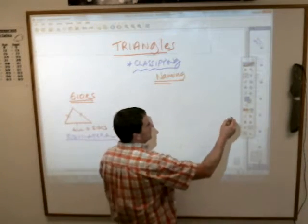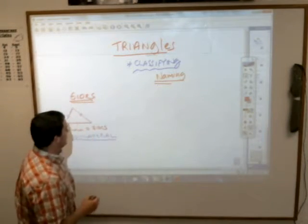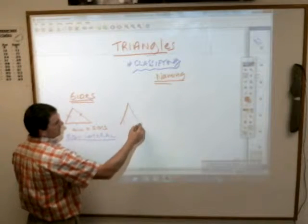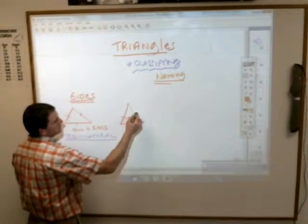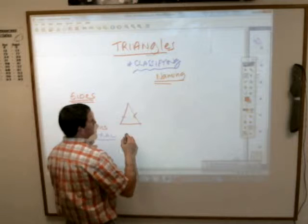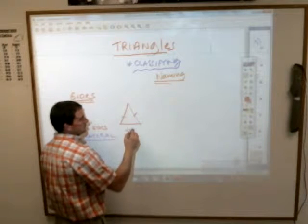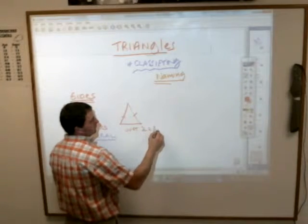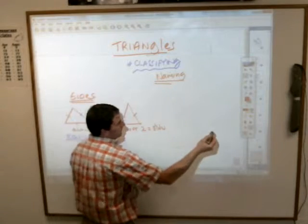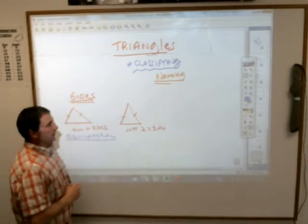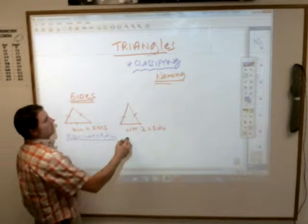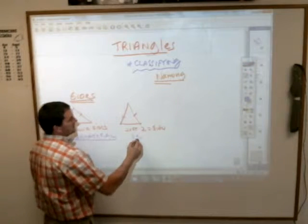Or, a triangle could have just two sides that are equal. And if something has just two sides that are equal, that — Alex — is an isosceles triangle. Isosceles.